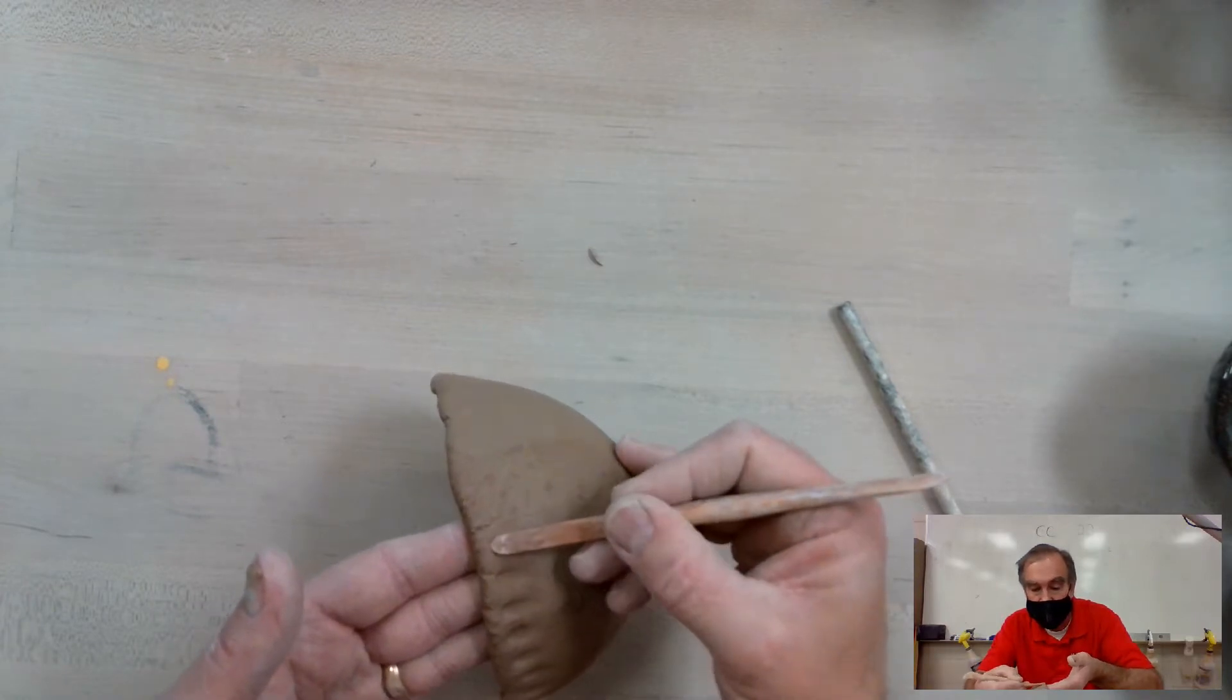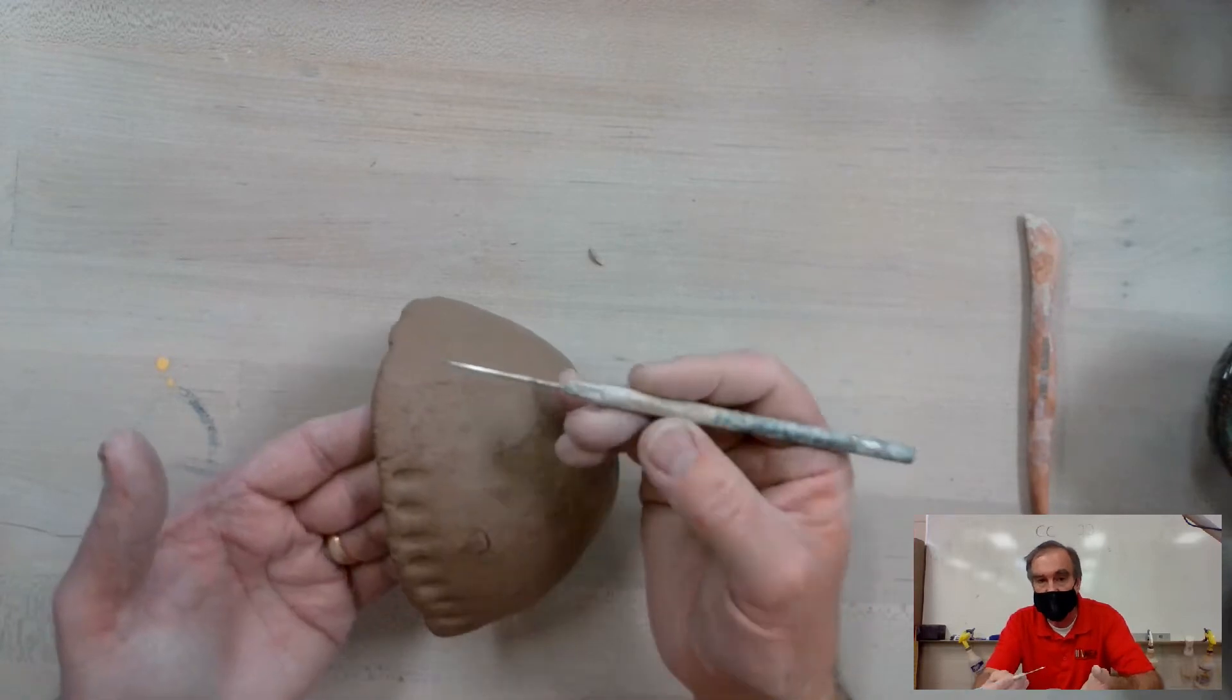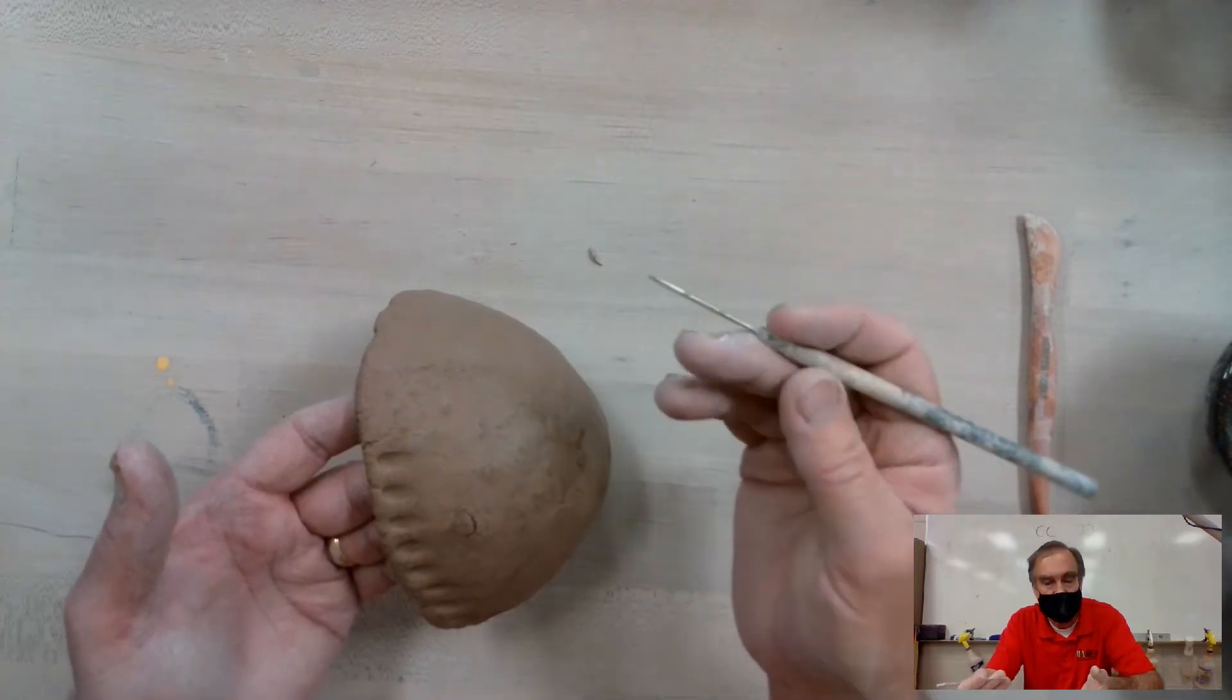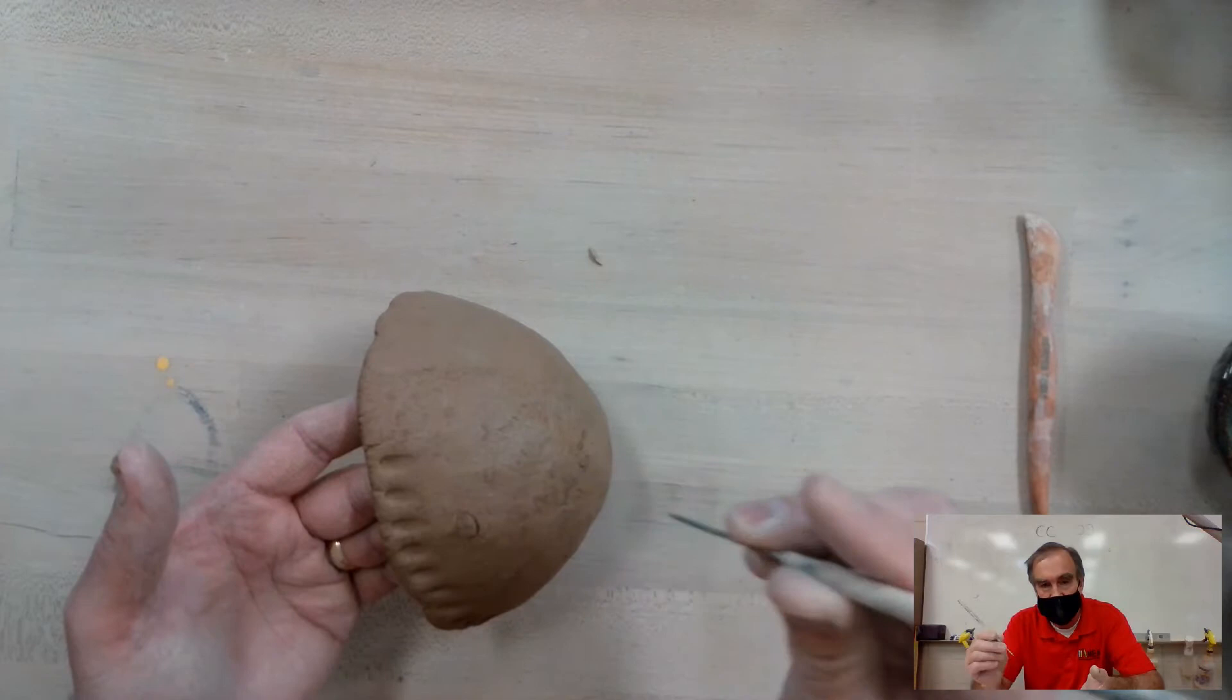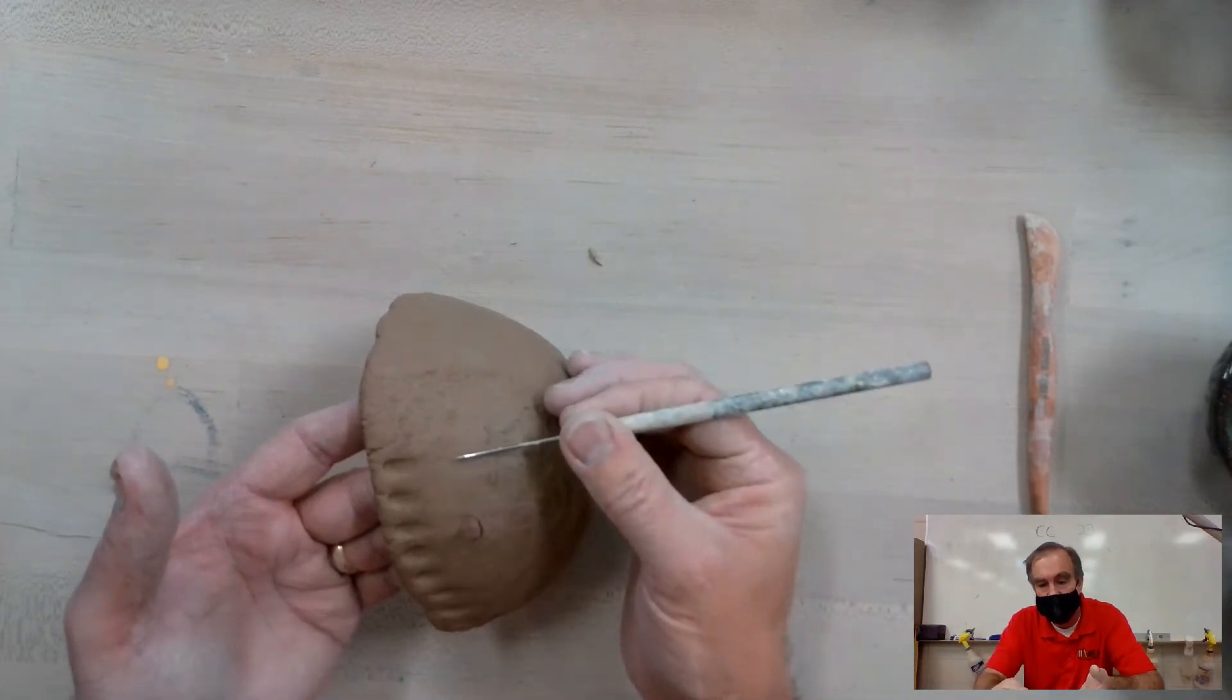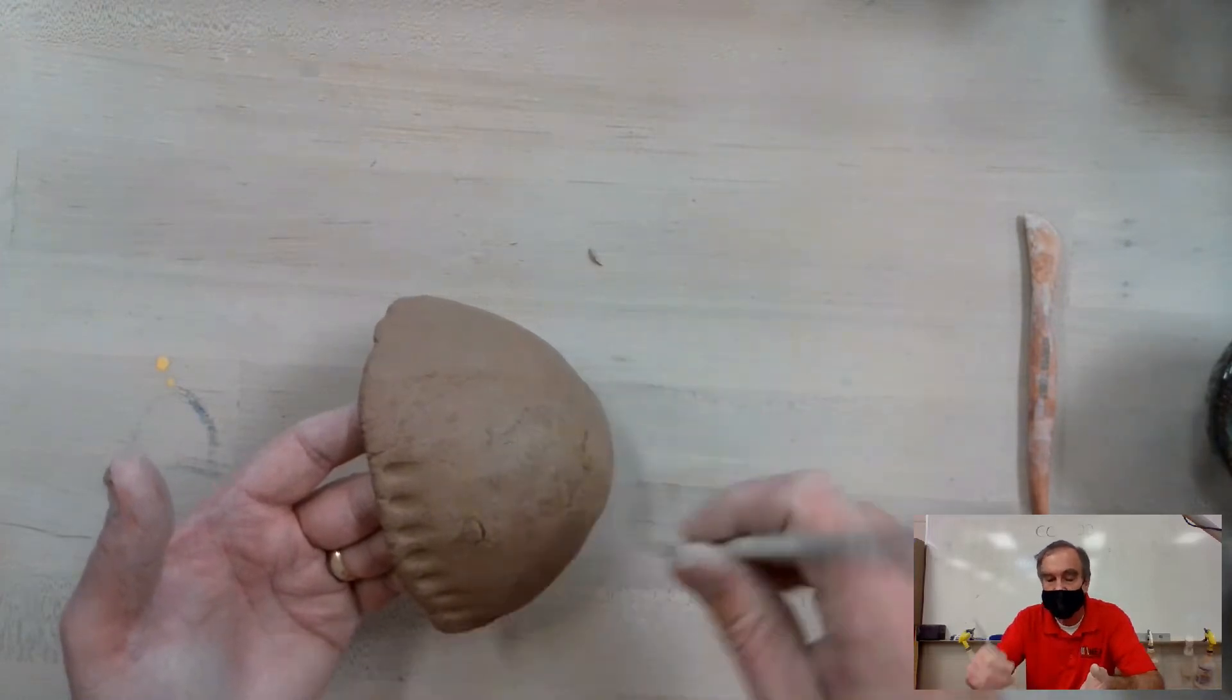We're going to want to use the needle tool to draw in different things. If you're using the needle tool, try to avoid having it at a 90 degree angle where you're just scratching into the surface. Lay it down on the side like I've been doing with this one as you make your lines.